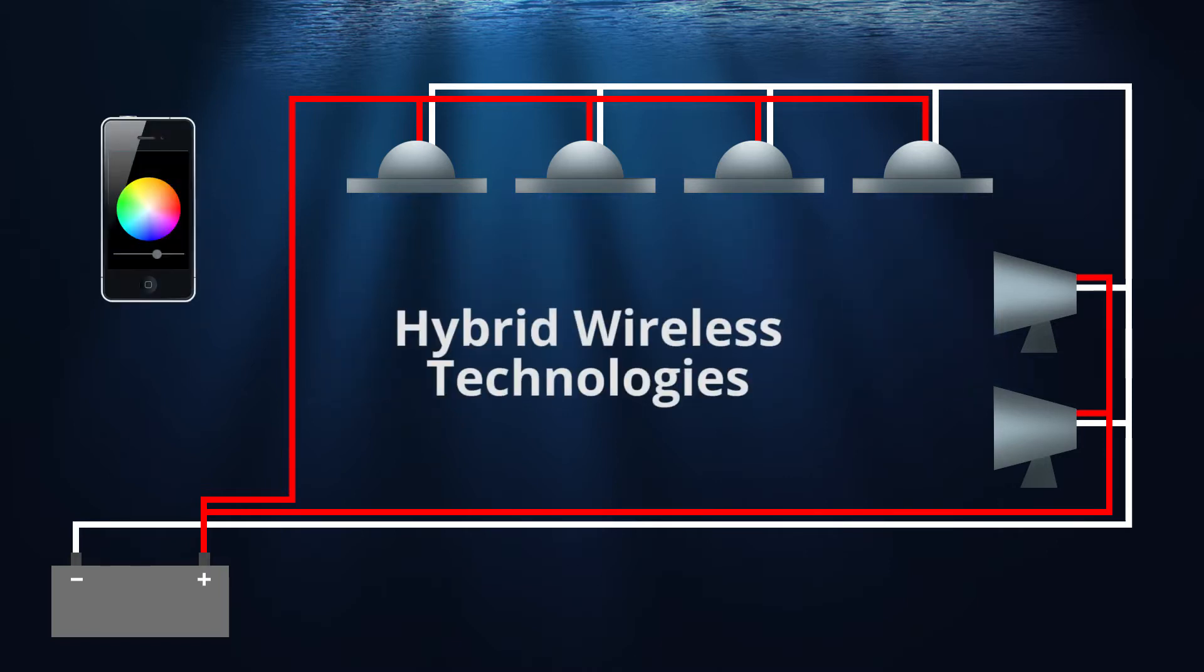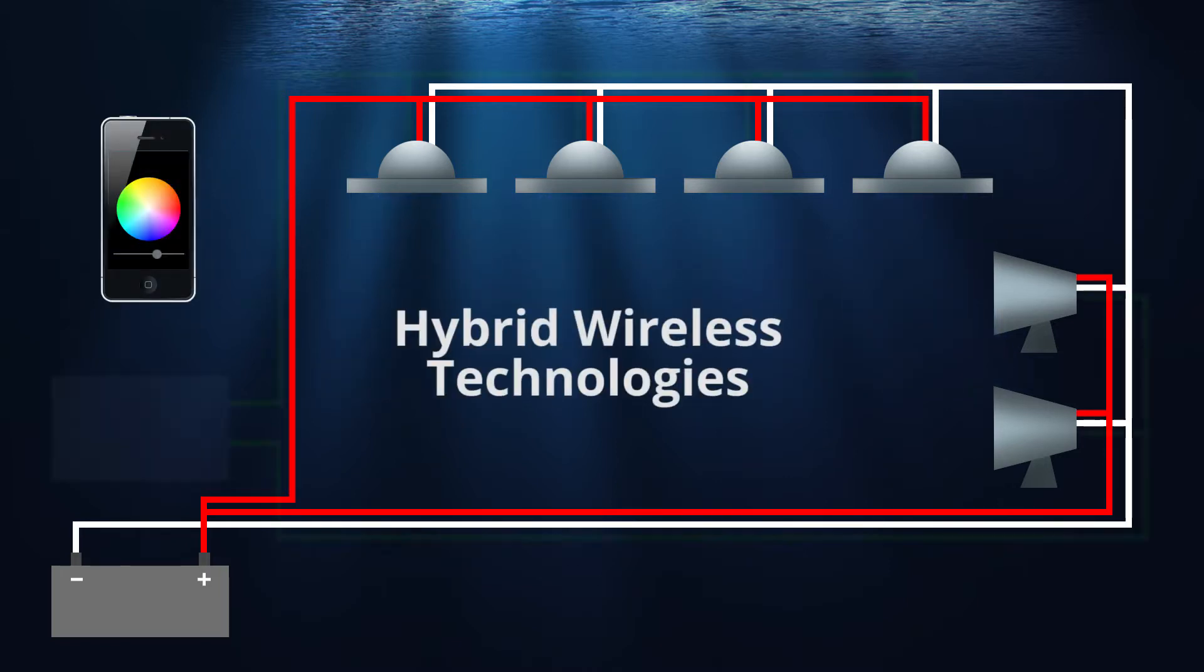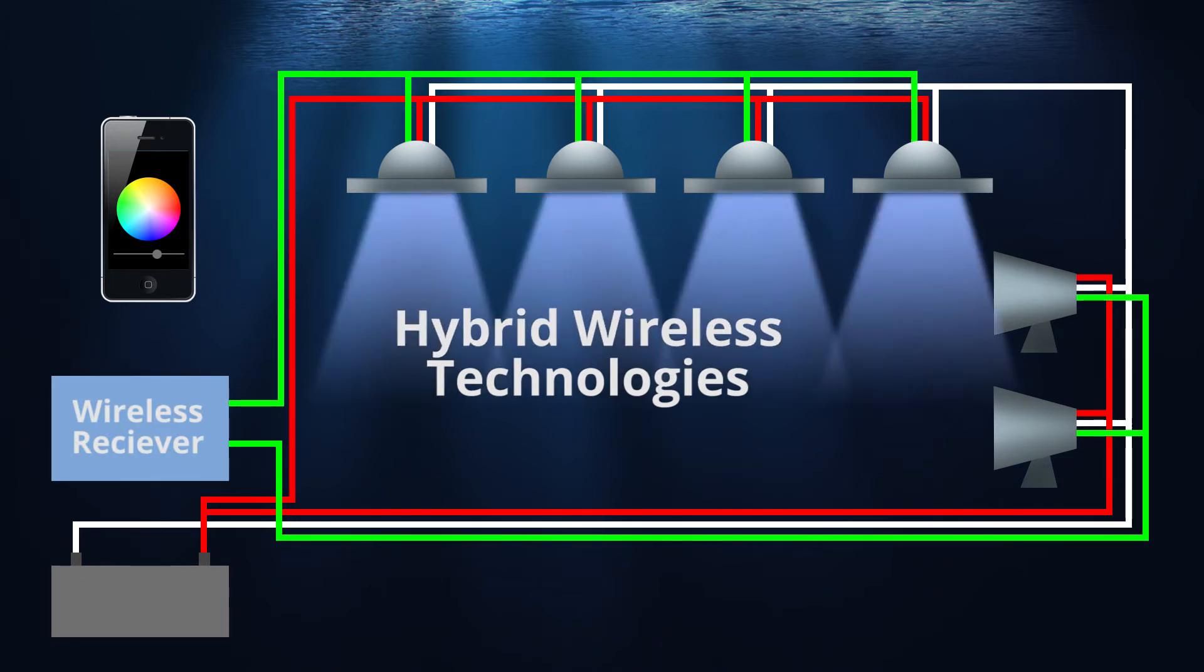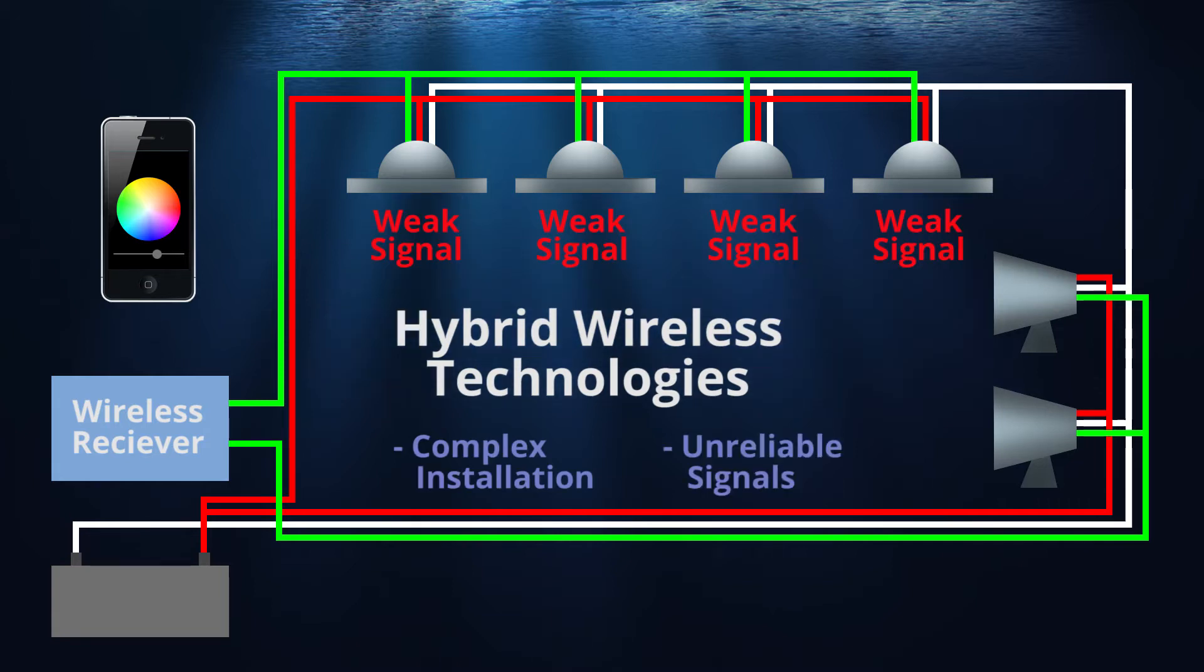Hybrid wireless technologies, which move antennas and circuitry out of the light to an external control module, can end up yielding the worst of both worlds, with multiple wires, complex installation, and potentially unreliable communication.